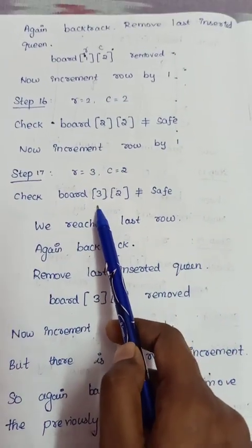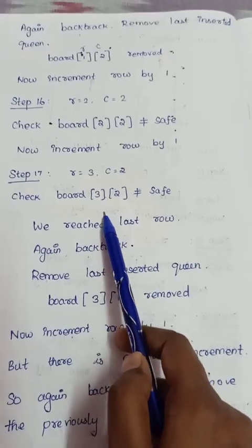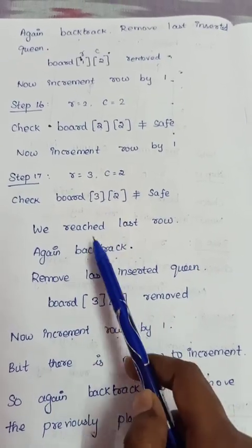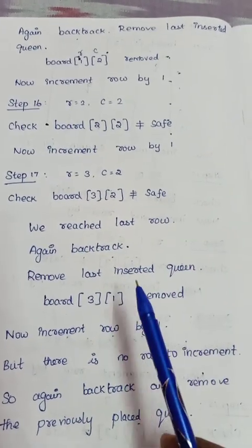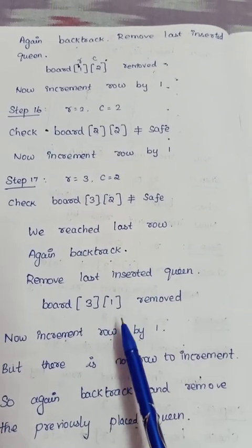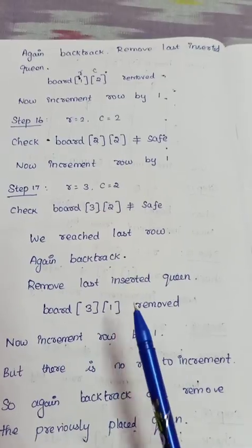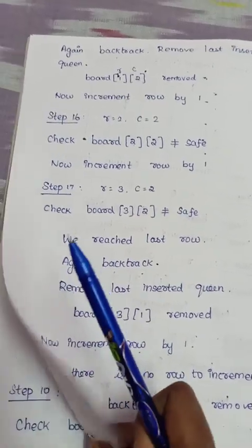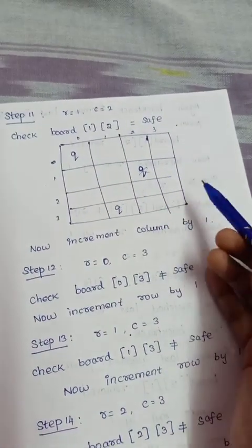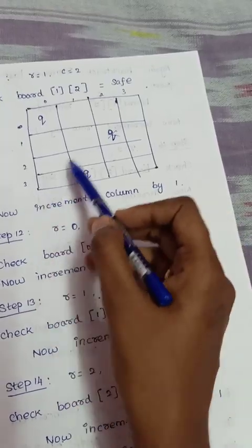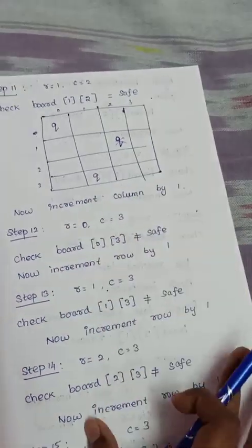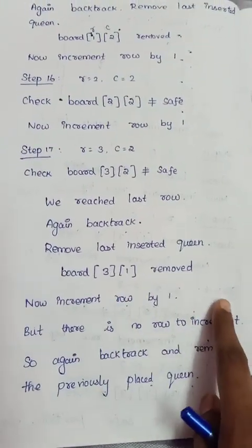If incrementing the row gives us row 4, we have reached beyond the last row. We backtrack again and remove the queen at board[3][1], then try incrementing row to 4 — but row 4 does not exist.